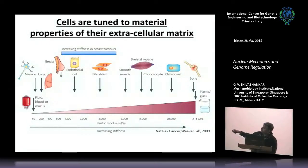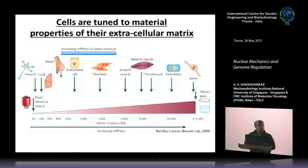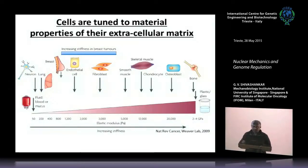Each tissue has very different stiffness, and cells during differentiation have to adapt to those stiffness values. What has become clear is that as cells trans-differentiate in many diseases, the cellular stiffness changes and adapts to a new microenvironment that is critical for regulating genes.